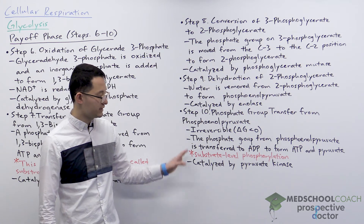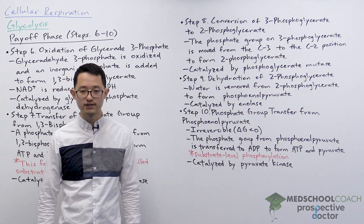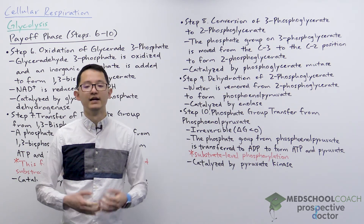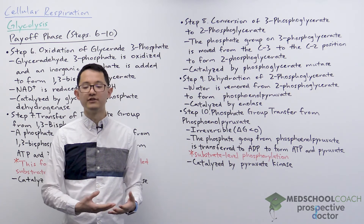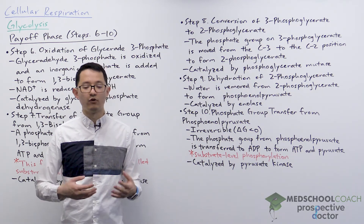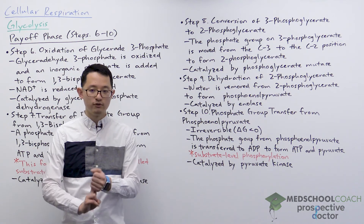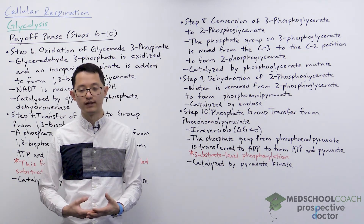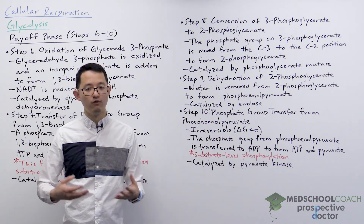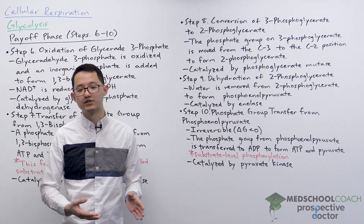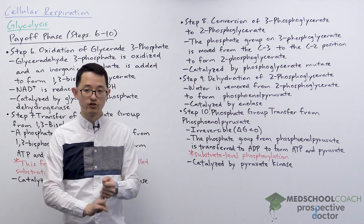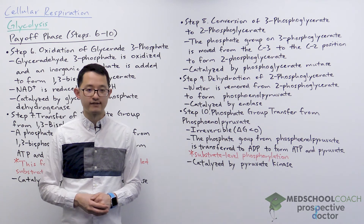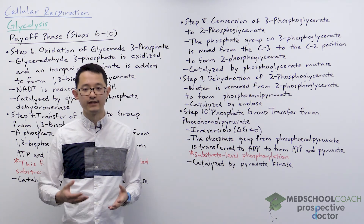These are the five steps of the payoff phase of glycolysis. Overall, the two molecules of glyceraldehyde 3-phosphate are transformed into two molecules of pyruvate. For each molecule we produce two ATP and one NADH, so with two molecules of glyceraldehyde 3-phosphate the payoff phase produces four ATP molecules and two NADH molecules in total. In the next video we'll summarize the results of both phases of glycolysis and discuss the net products produced.